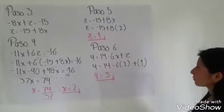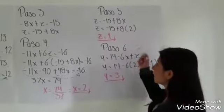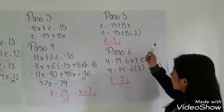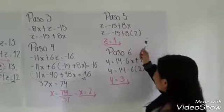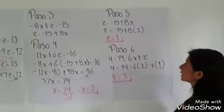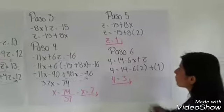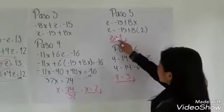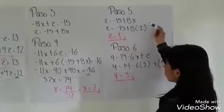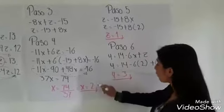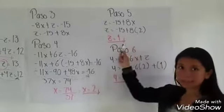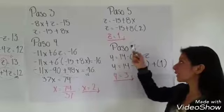El paso 5 es poner el número que nos había salido en X, que en este caso fue 2. Entonces Z es igual a menos 15 más 8 por 2, nos sale 1. Entonces este es el valor de Z.